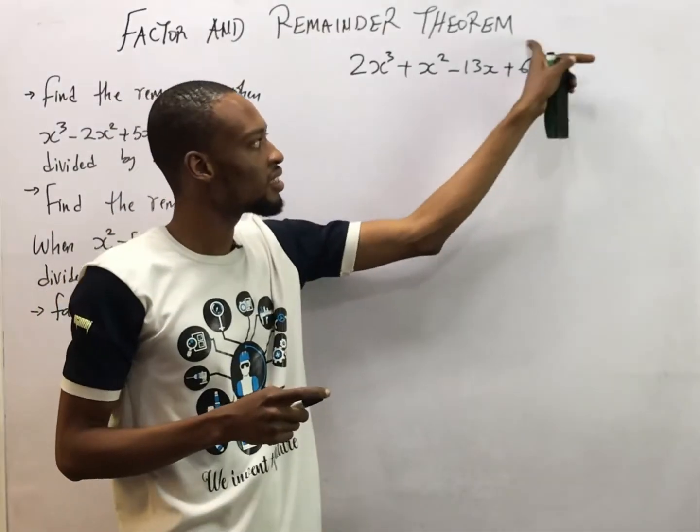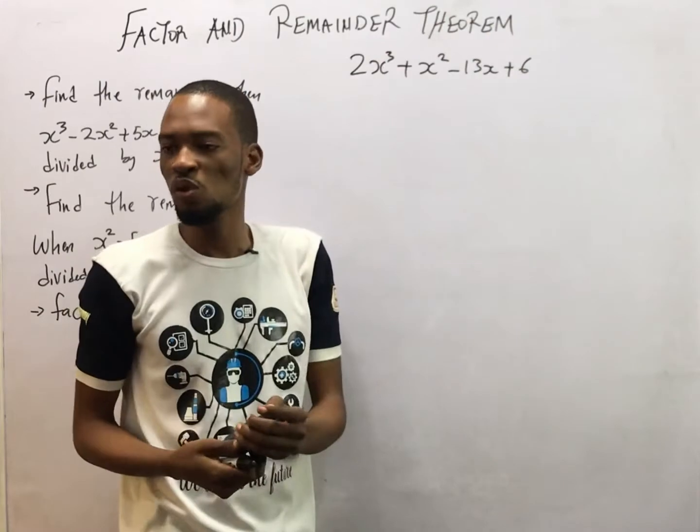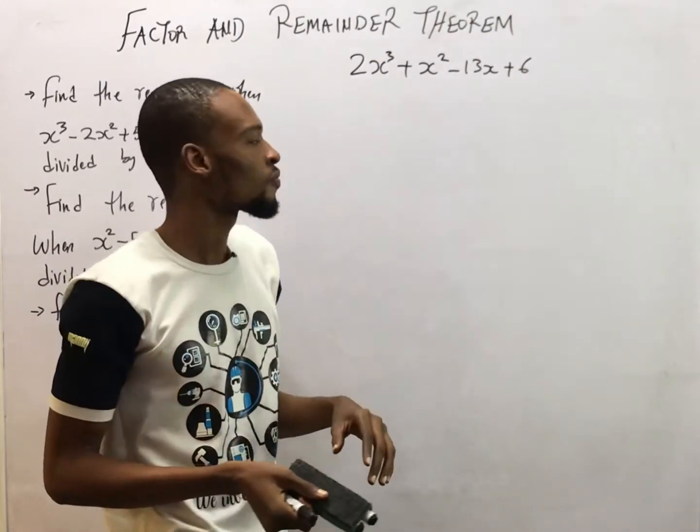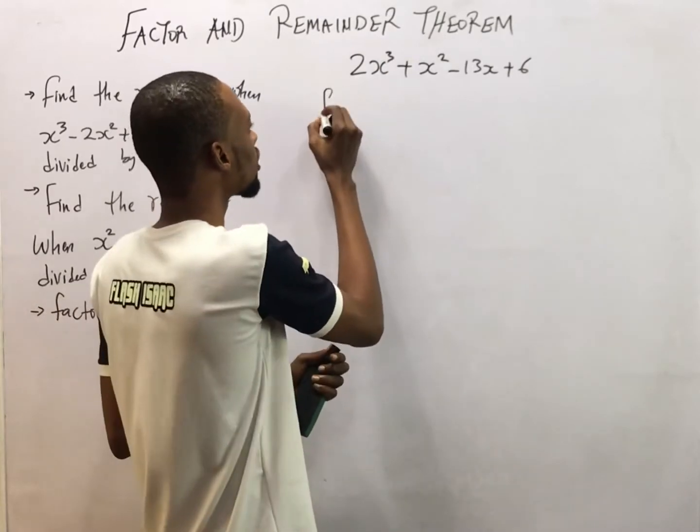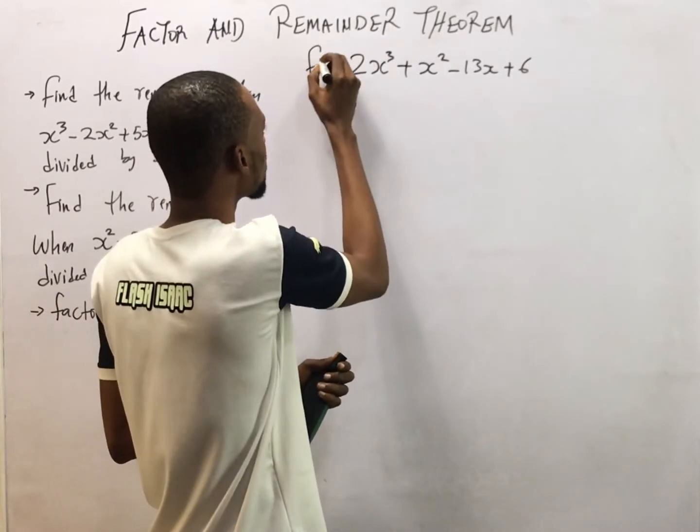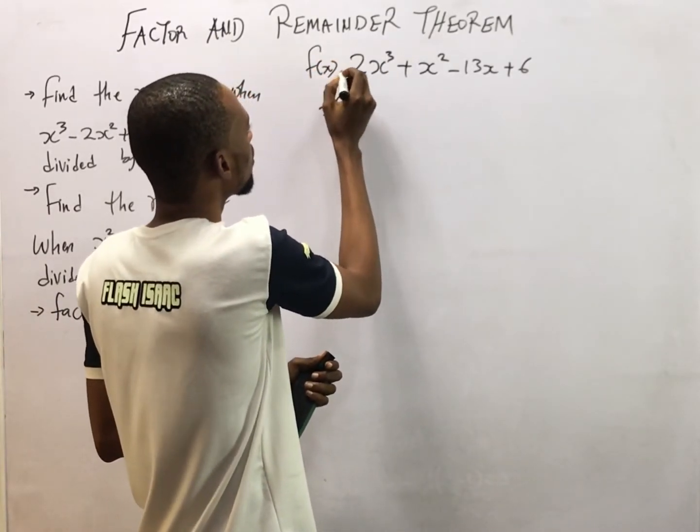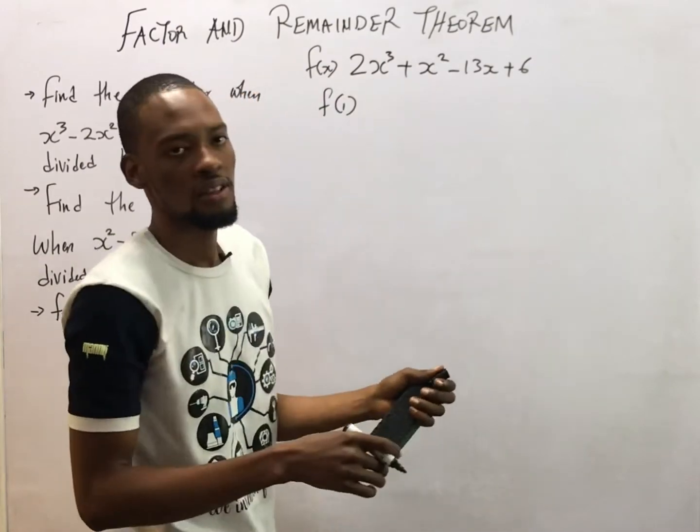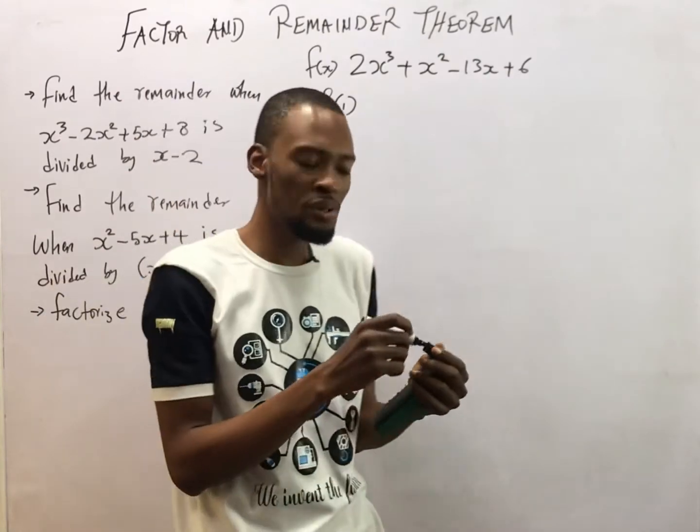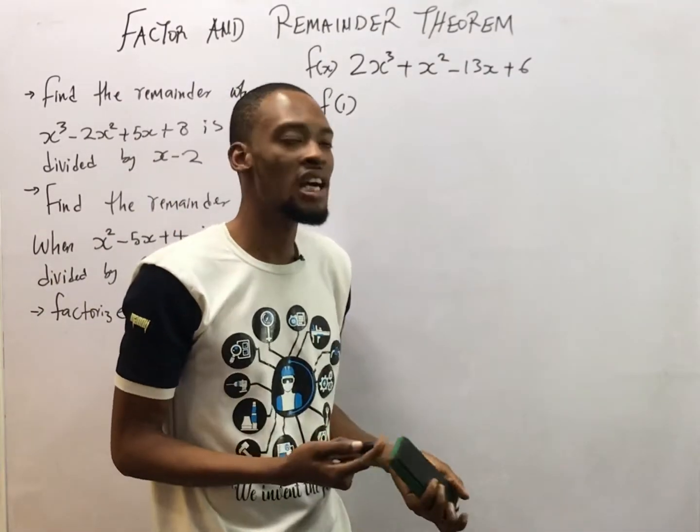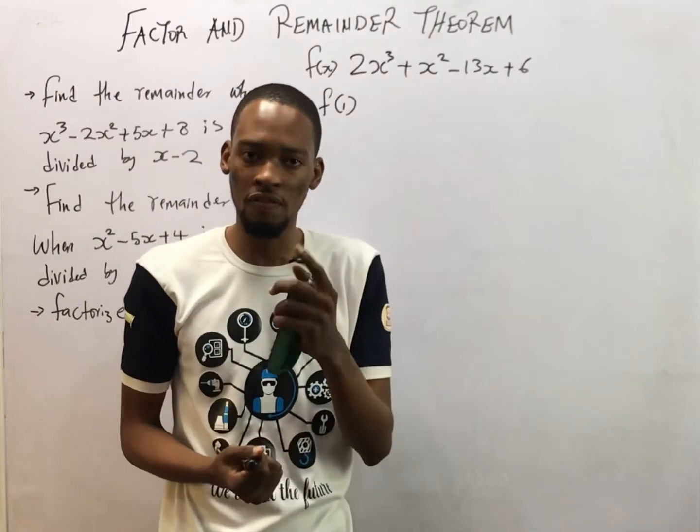Any value you substitute here to get 0 would be your first factor. So you start from 1. Look for a function of 1. This is function of S. So look for function of 1. Wherever you see S in this expression, put 1. If it gives you 0, then S equals 1 is a factor.